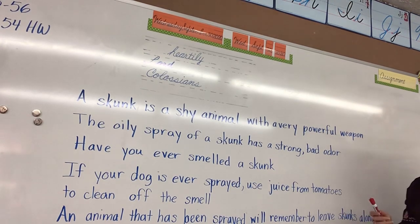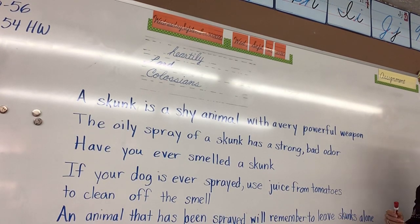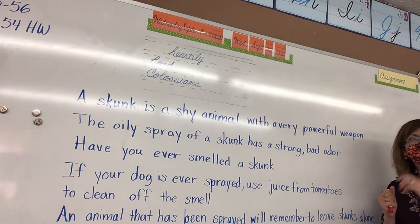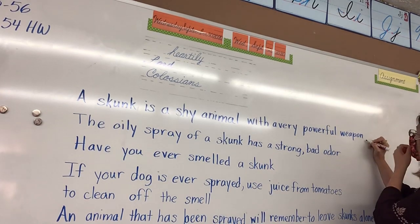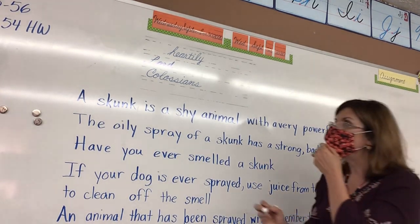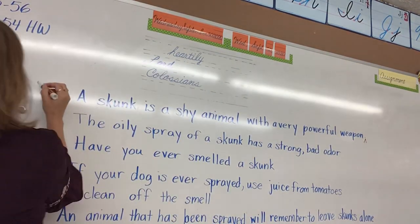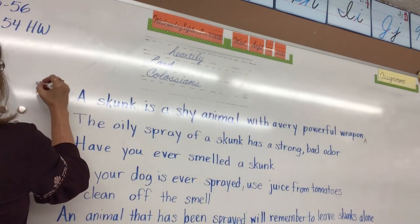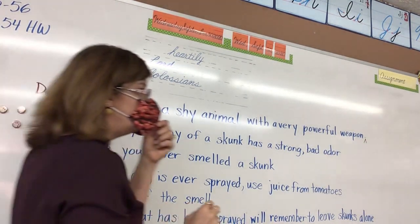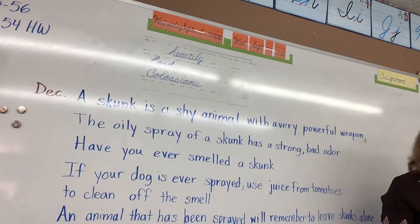Let's read the first sentence out loud: 'A skunk is a shy animal with a very powerful weapon.' What kind of sentence is that? It's declarative — it ends with a period. So you would insert a period. And on some tests, you have to tell what kind it is, so you put DEC for declarative.